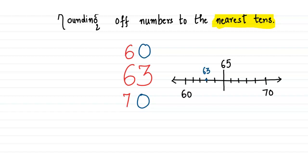It is closer to which ten? 60 or 70? Yes, we can see that it is closer to 60, so it gets rounded off to 60. Let's take another number.